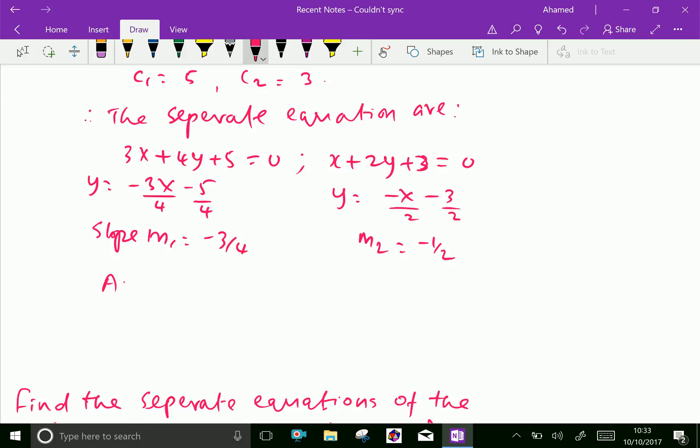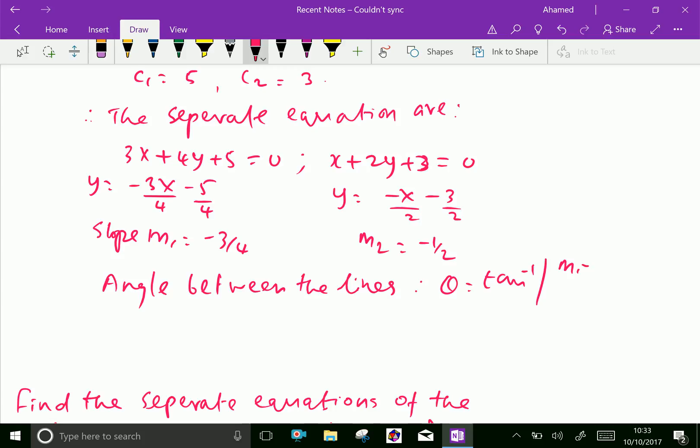Therefore, angle between the lines, theta equals tan inverse m1 minus m2 over 1 plus m1 m2, which gives theta equal tan inverse minus 3 by 4 plus half over 1 plus 3 by 4 into half. After simplification, theta gives tan inverse 2 over 11.